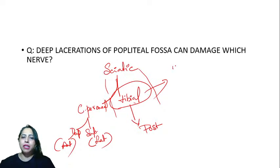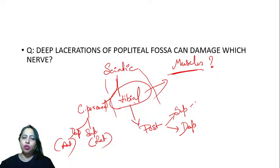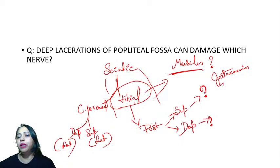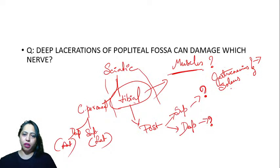The tibial nerve supplies the posterior compartment. The posterior compartment has superficial and deep sets of muscles. The superficial muscles are gastrocnemius and soleus. They form the Achilles tendon — also called tendocalcaneus. The action of this tendon and those muscles is plantar flexion — pointing the toes downward.